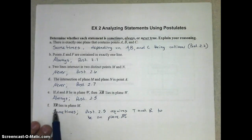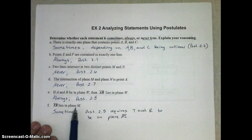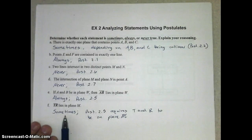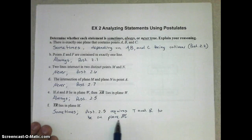And similarly, part F, if TR is to lie in plane M, that can sometimes be true. Postulate 2.5 requires that T and R, both of those points, must be on plane M.